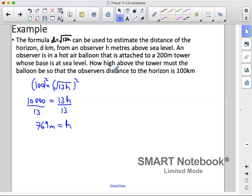However, we're asking how high above the tower, not how high above sea level. So we have to go 769 minus the height of our tower. So that's 569 meters is our h value.